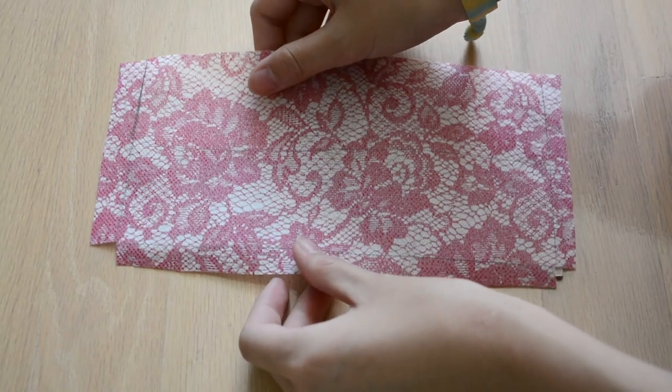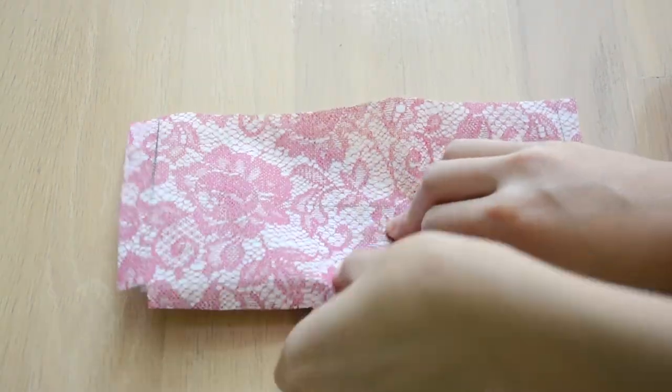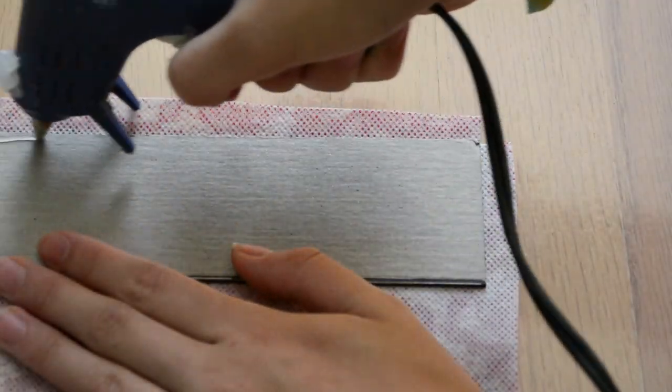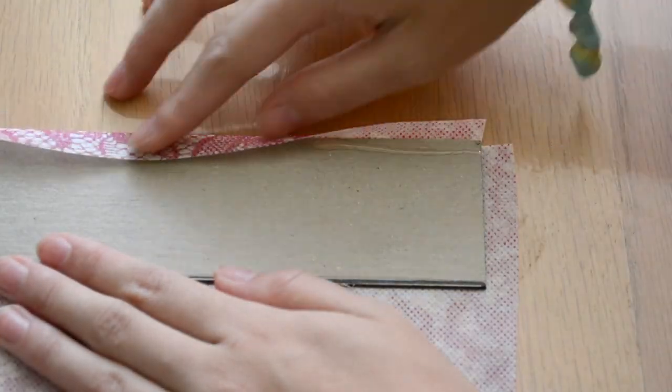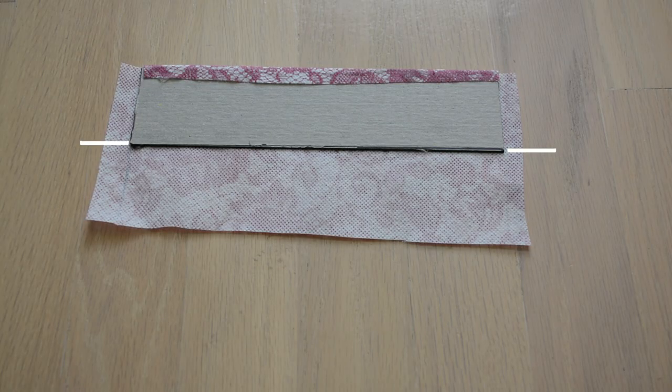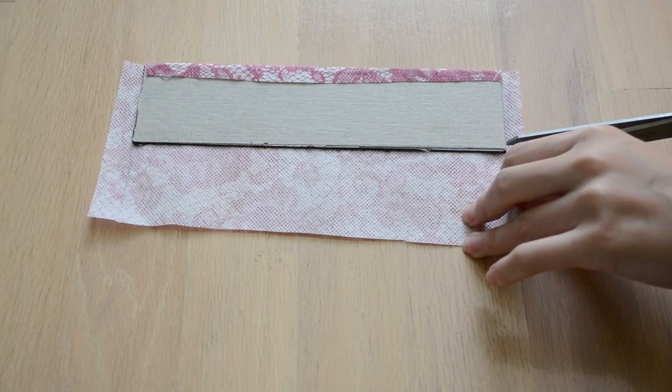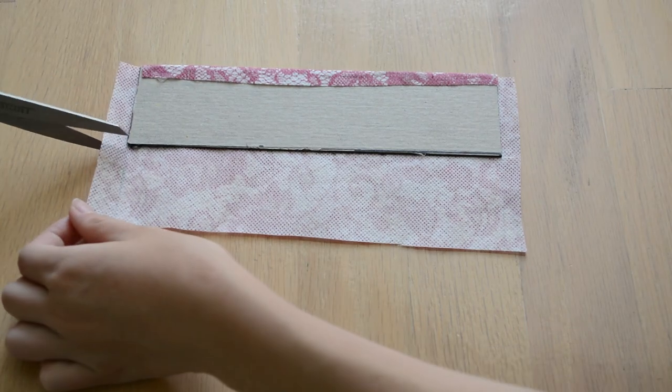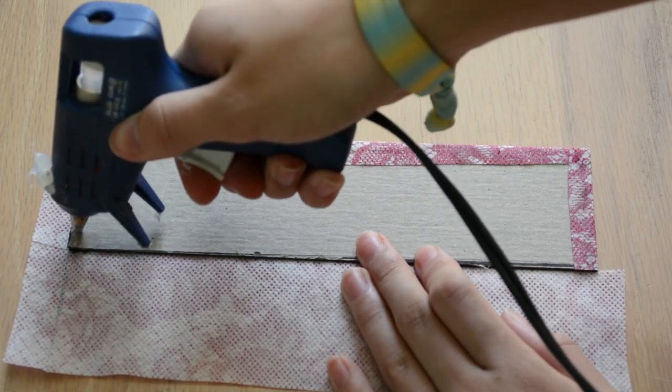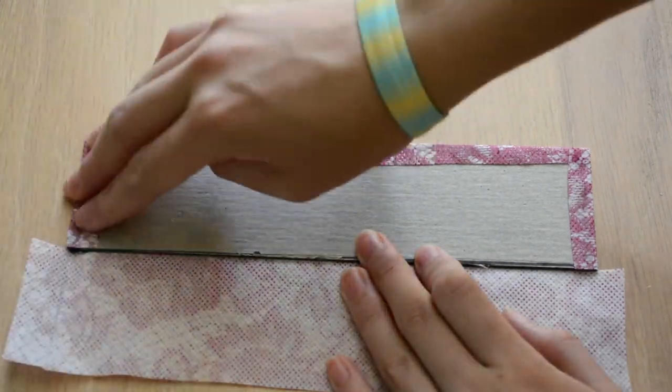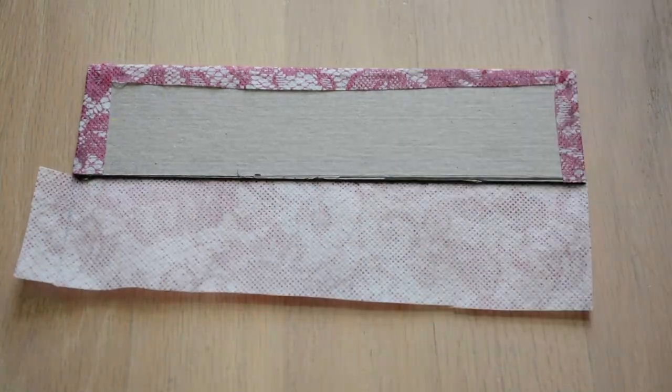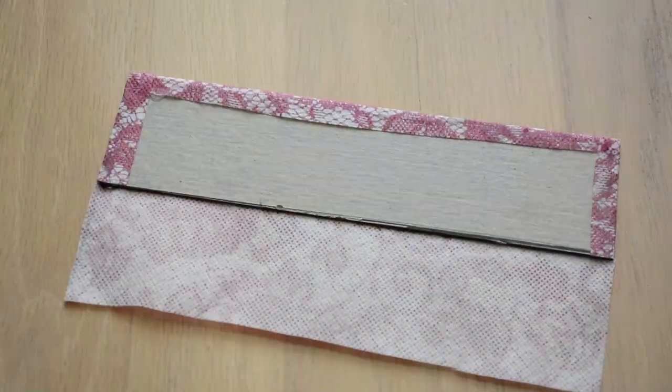I'm going to be using a hot glue gun to glue the fabric onto the cardboard. So I'm just gluing the edge of the cardboard and then folding down that little flap that we made earlier. Once that's glued down, you're going to want to make little snips right there, and then you're going to glue those little flaps down. And finally, I'm cutting off that little excess fabric bit right here and then just gluing that whole piece down.